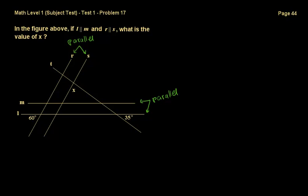Since vertical angles are equal, and this angle and this angle are vertical, if one is 60 degrees the other is also 60 degrees. Since both pairs of lines are parallel, this shape is a parallelogram. Opposite angles in a parallelogram are equal, so the opposite angle is also 60 degrees. The vertical angle to that is also 60 degrees. So we've established that this angle here is 60 degrees.